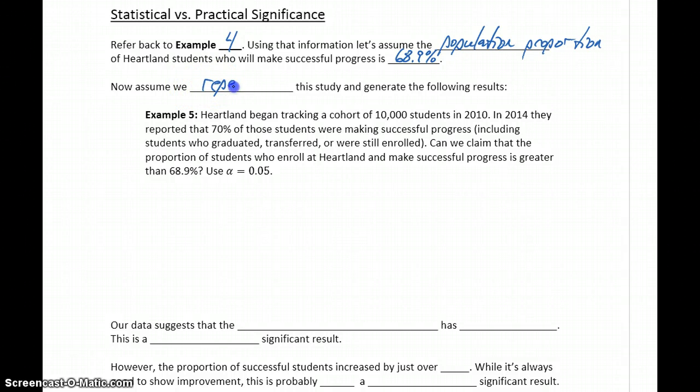Now let's assume that we repeat this study and generate the results below. So we have a few things that have changed. Now we're looking at a larger sample, 10,000 students, and in the end we're going to report 70% of those students making successful progress. So these are results I've completely made up, just to demonstrate this point. Can we claim that the proportion of students who enroll at Heartland and make successful progress is greater than 68.9%?